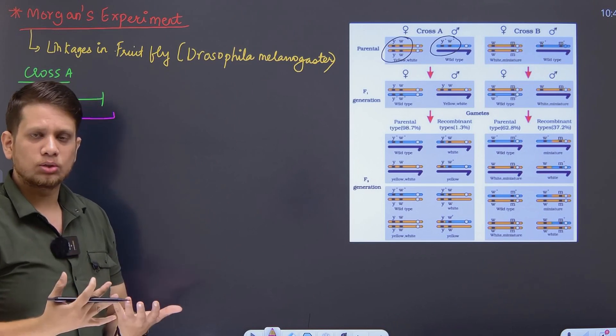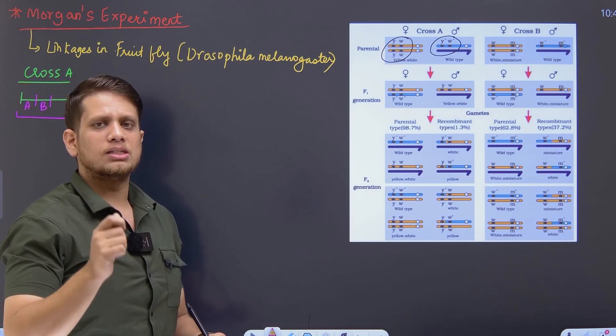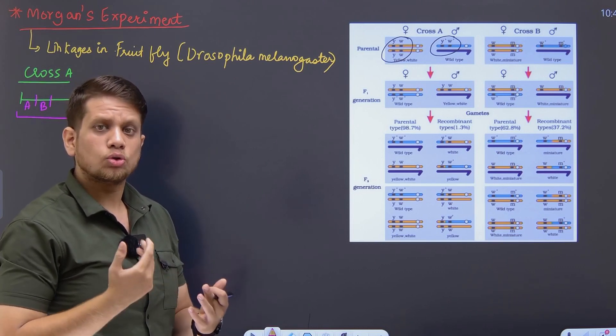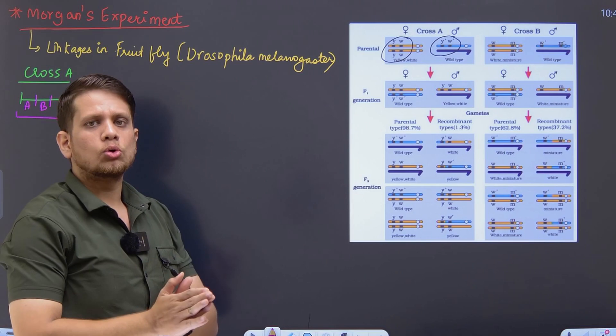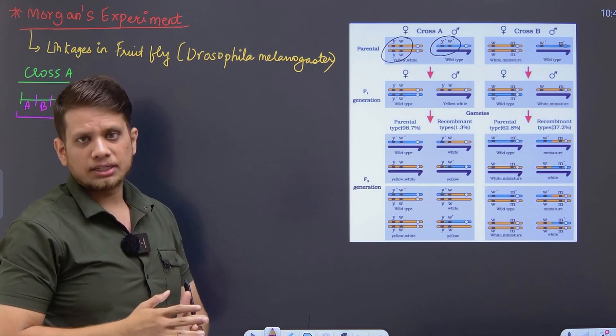When genes are directly inherited, then in that case, parental combination percentage will get more. And recombinants, recombinants means those that have crossed over, the crossover progeny, their percentage will be reduced.